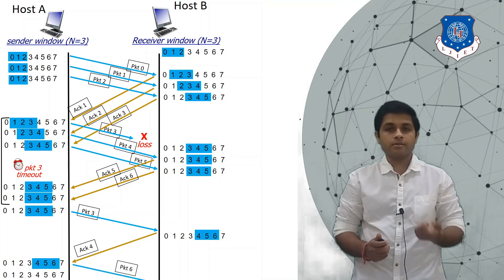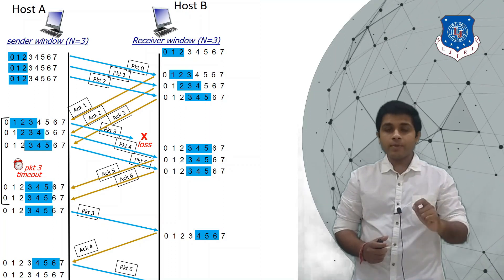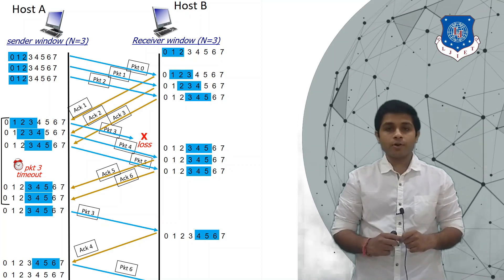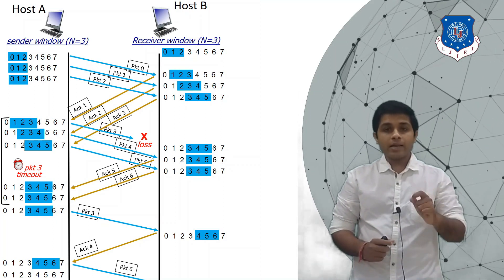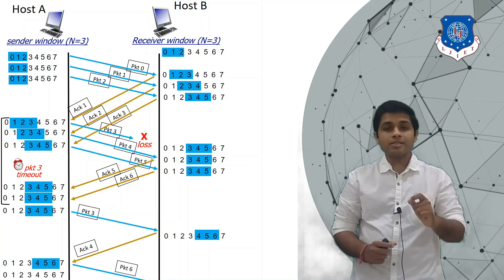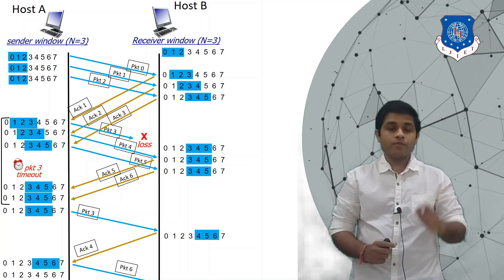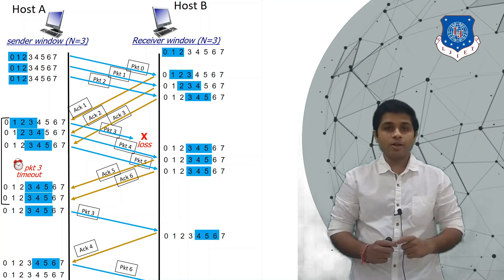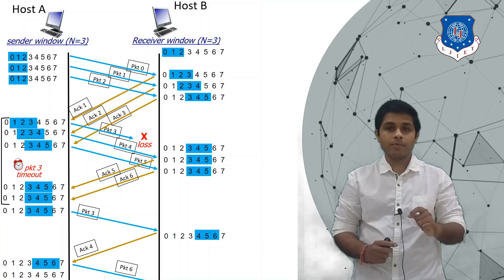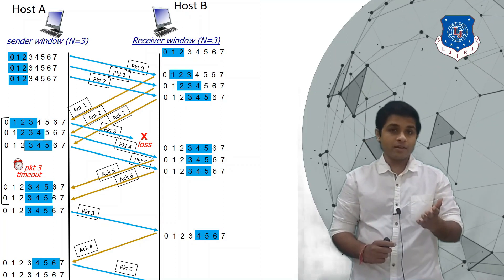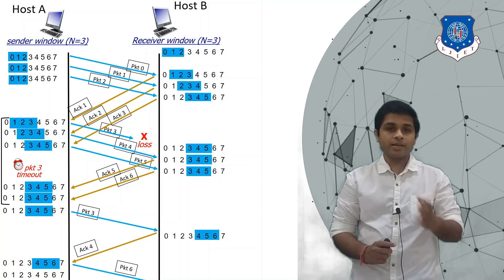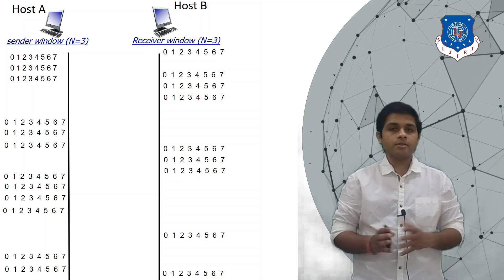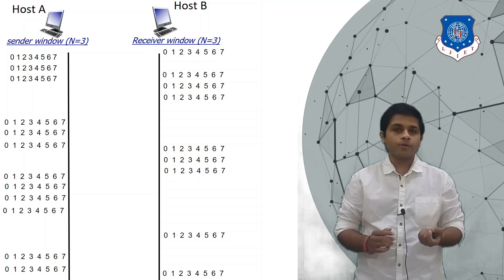As host A receives ACK 4, it confirms that packet 3 is delivered successfully, so A will send the next packet in sequence, which is packet 6. The advantage of the Selective Repeat protocol is that whenever any packet is lost, we do not send the whole frame again — we send only that particular lost packet. In Go-Back-N we had to send the whole frame again, but that is not the case with Selective Repeat.